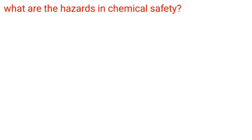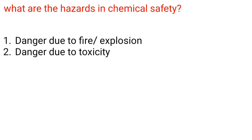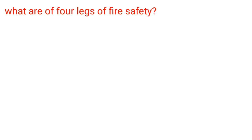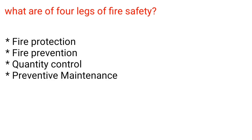What are the hazards in chemical safety? 1. Danger due to fire or explosion. 2. Danger due to toxicity. What are the four legs of fire safety? Fire protection, fire prevention, quantity control, and preventive maintenance.